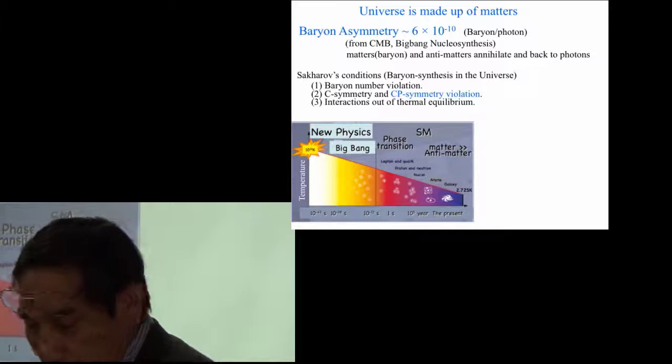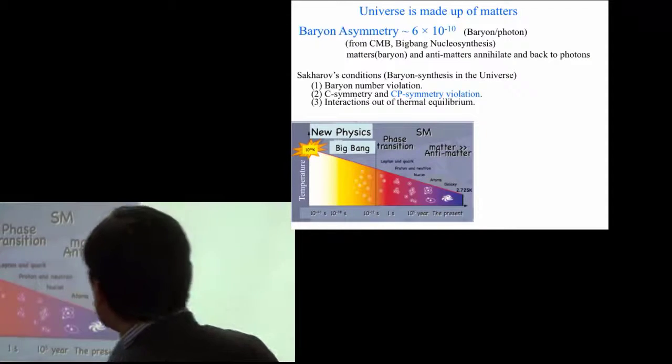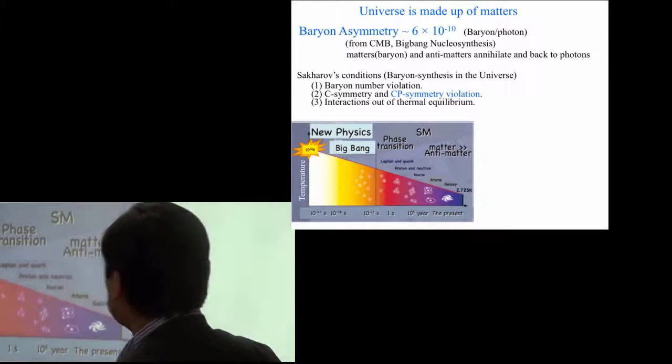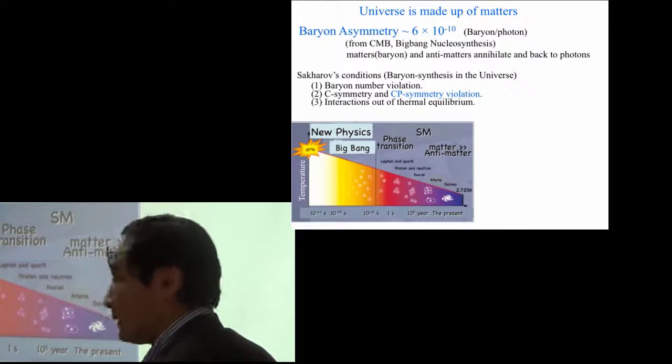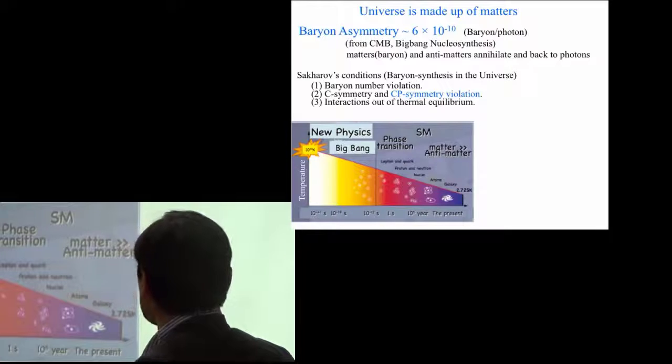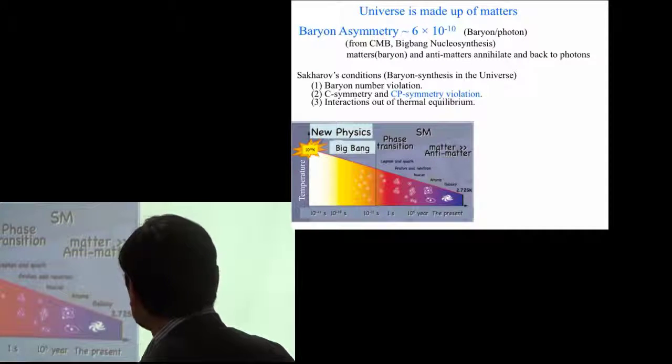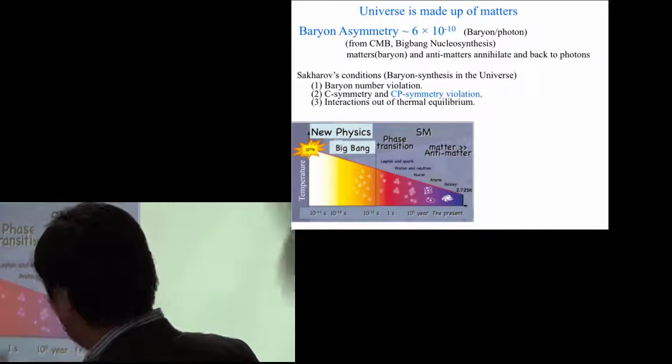To have the baryon synthesis in the universe, Sakharov's three conditions are necessary. Of course, the baryon number should be violated, and charge conjugation and the CP symmetry should be violated, and also it should be away from the thermal equilibrium.